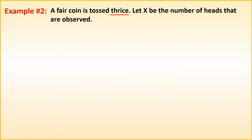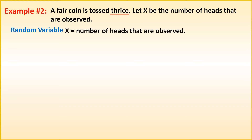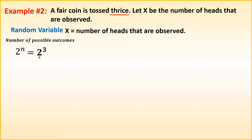Example 2: a fair coin is tossed thrice. Let X be the number of heads observed. Our random variable X is the number of heads. To find how many possible outcomes we have, use the formula 2 raised to N. The 2 represents the faces of the coin — head and tail — and N is the number of times you toss. Since it's tossed three times, we have 2 raised to the 3rd power, which equals 8. So there are 8 possible outcomes.